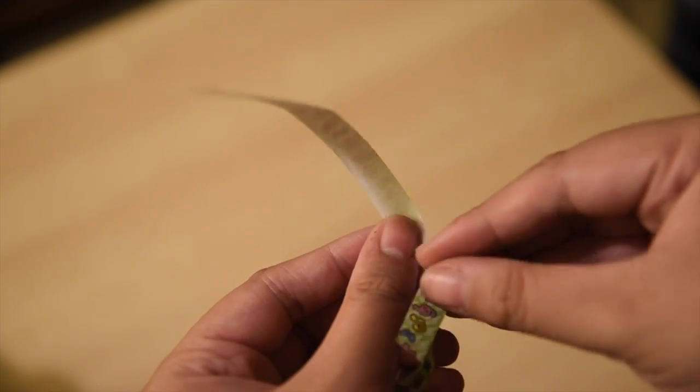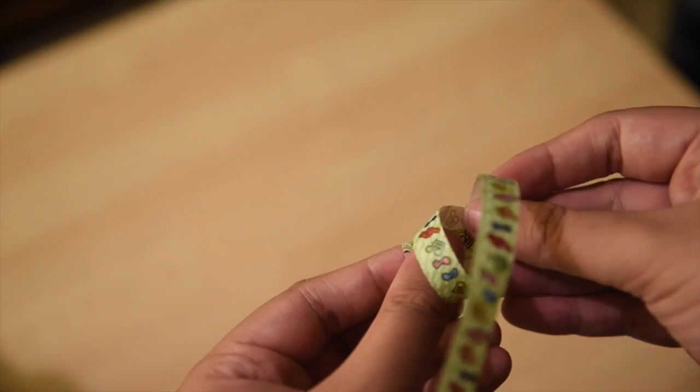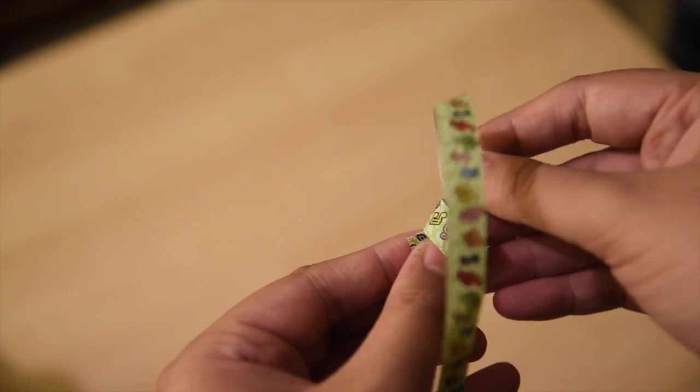Next you want to pull the right side of the paper over the left side and start pulling on the long end until you make a pentagon.